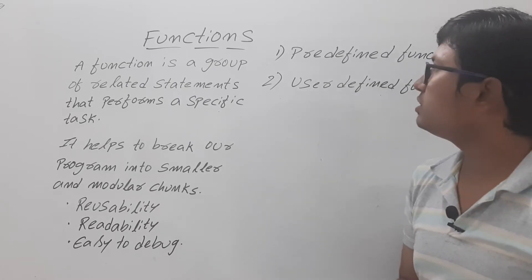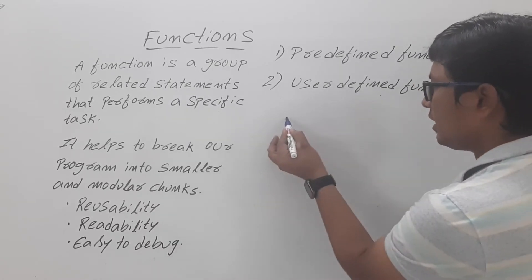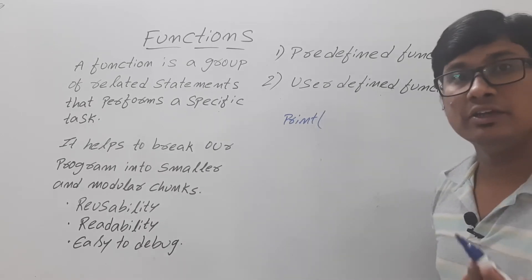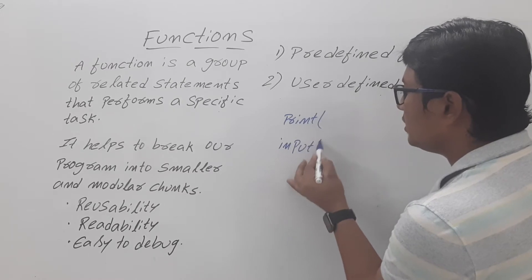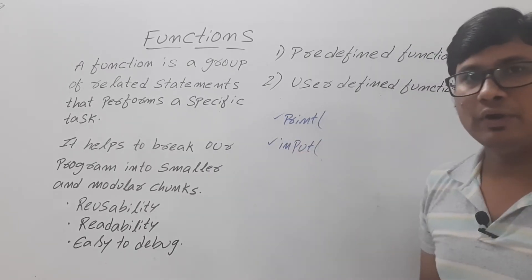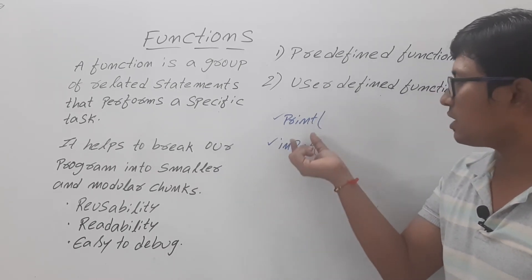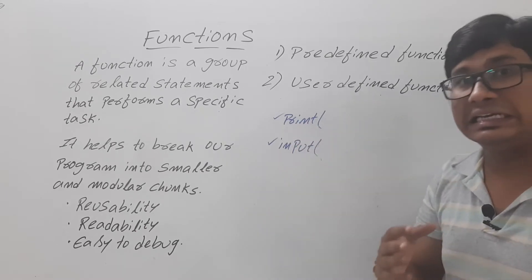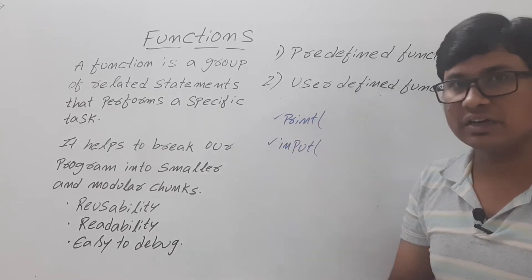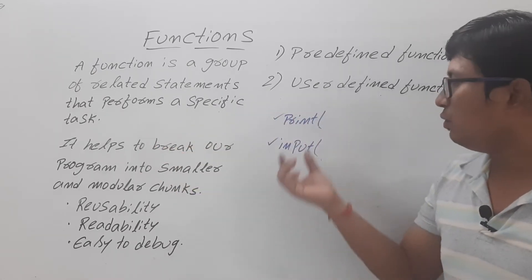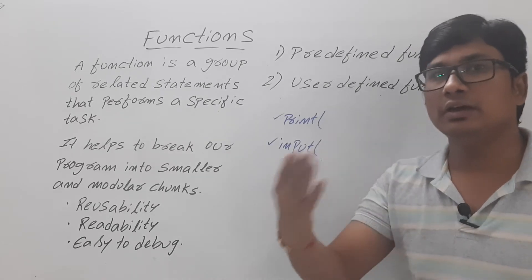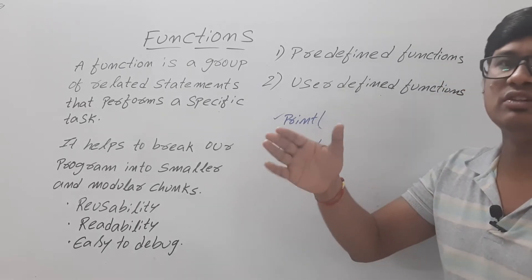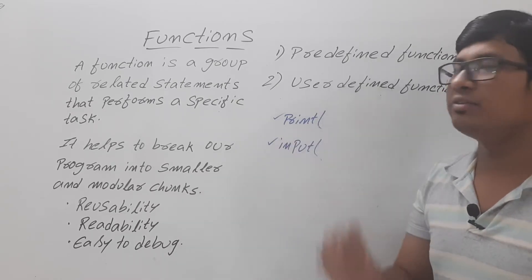We have already used predefined functions. For example, the print function is a predefined function, and the input function used to read input from the user is also a predefined function. Predefined means Python developers have already written the necessary code internally. When we call print, it displays output on the screen — we don't know its internal definition, we are just calling it.